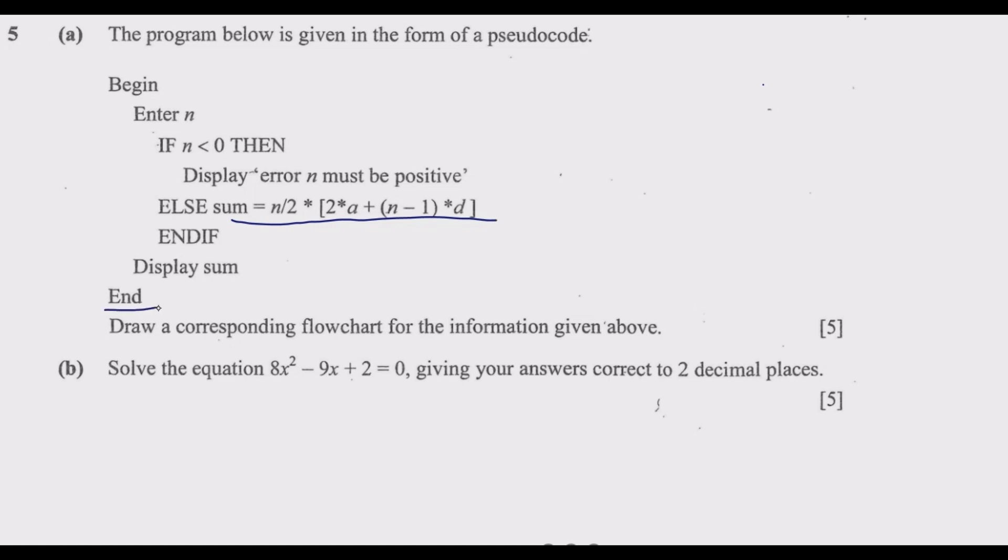We need to draw the flowchart. Whenever we have begin, we use the circle shape, also for end. When doing calculations, we use the rectangular shape. Where we are branching, we use the parallelogram shape. We start with begin, then enter n.